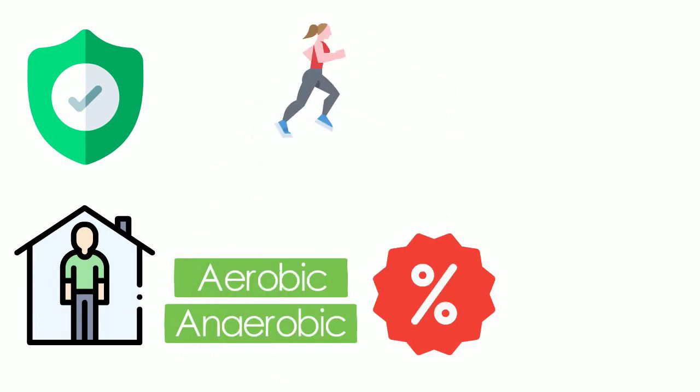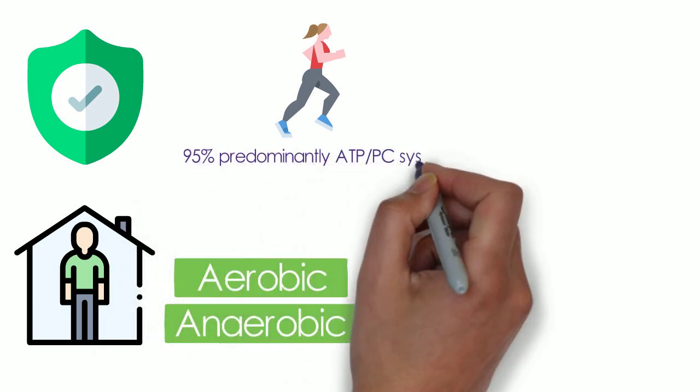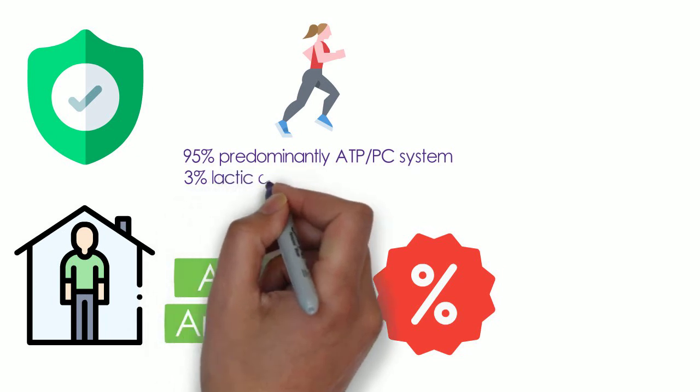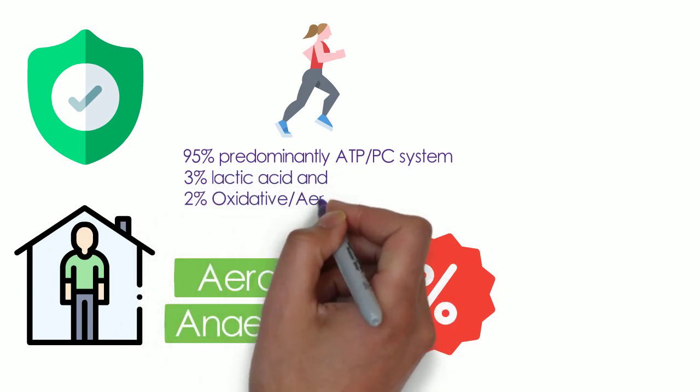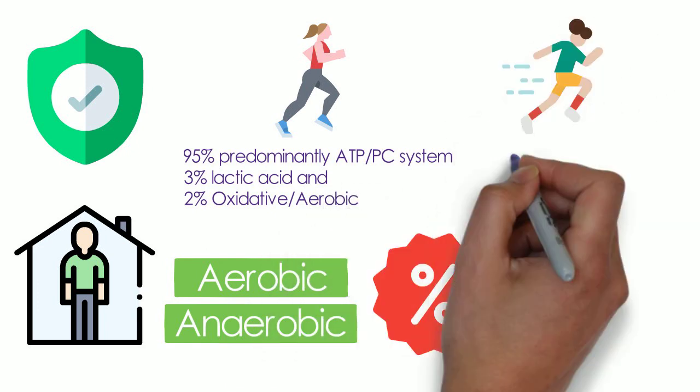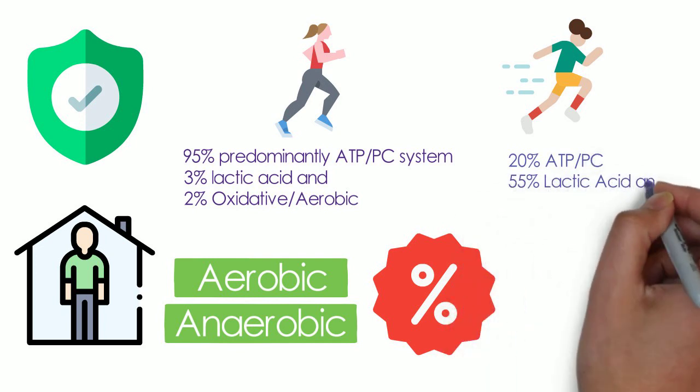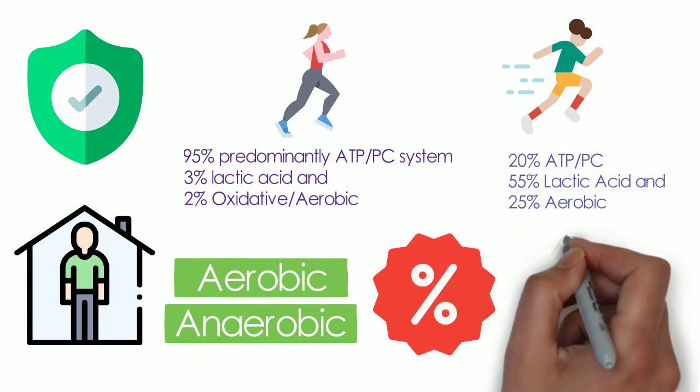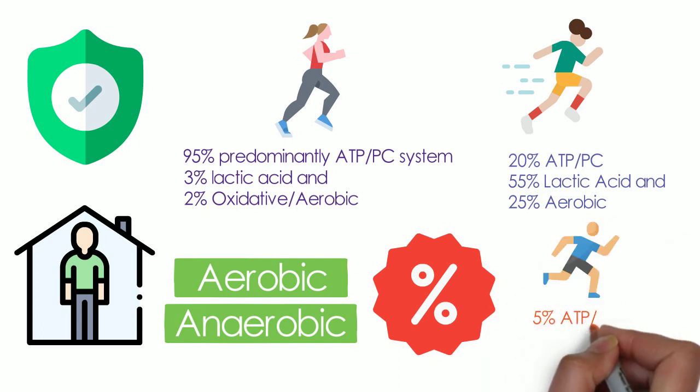For instance, a 100 meter dash will be 95% predominantly ATP-PC system, 3% lactic acid, and 2% oxidative or aerobic. A 1500 meter race will predominantly use 20% ATP-PC, 55% lactic acid, and around 25% aerobic. Lastly, a marathon would have 5% ATP-PC, 5% lactic acid, and 90% aerobic.